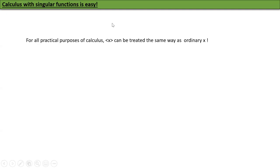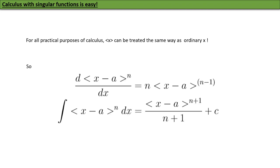Calculus with singularity functions is very easy. For all practical purposes, ⟨x⟩ can be treated the same way as ordinary x. So the derivative of ⟨x − a⟩ⁿ is n·⟨x − a⟩ⁿ⁻¹.